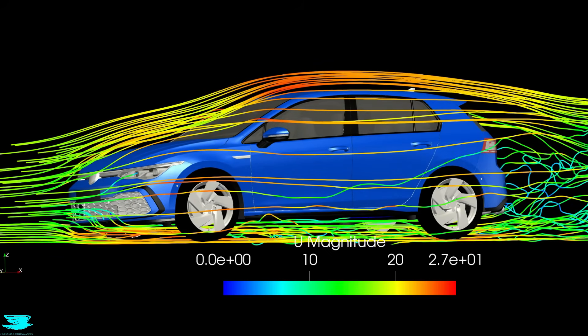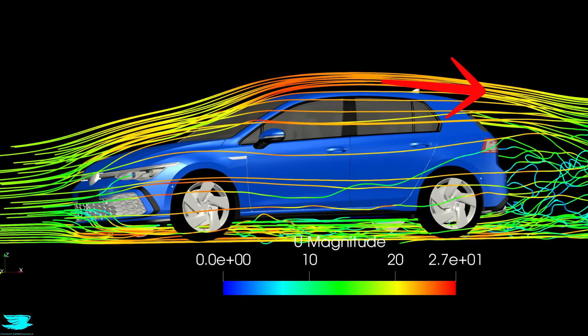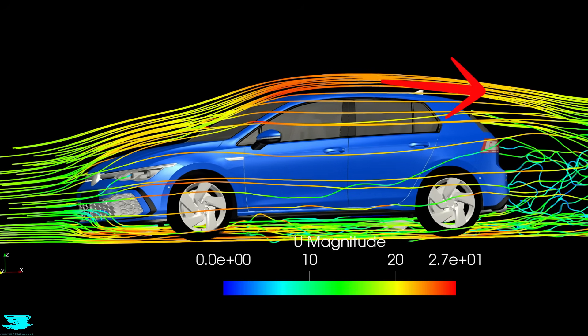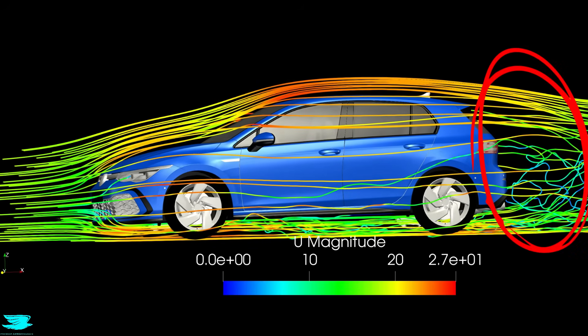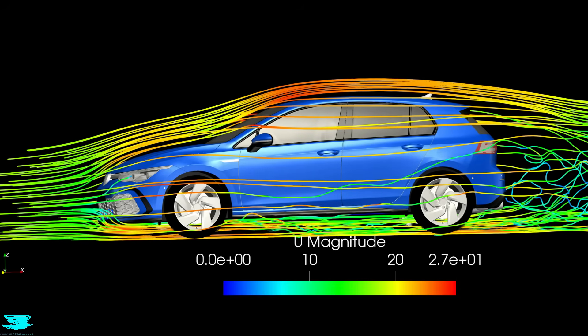Then, because the flow is so well behaved, it can follow the rear of the roof better and is angled down. That might not seem like much, but that results in the wake being much smaller. And because the wake is so much smaller, the drag drops.